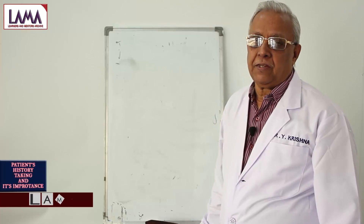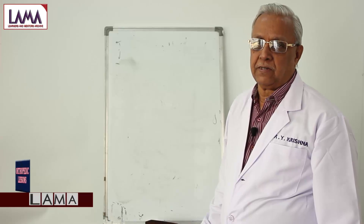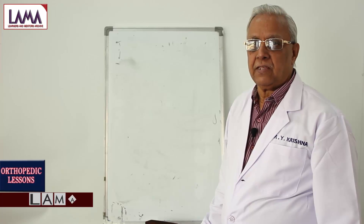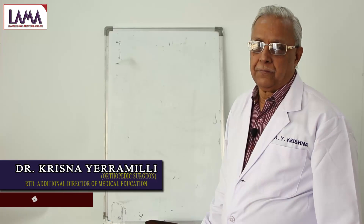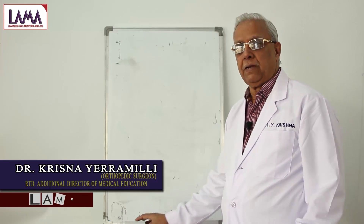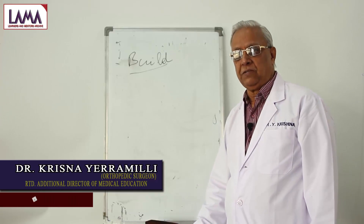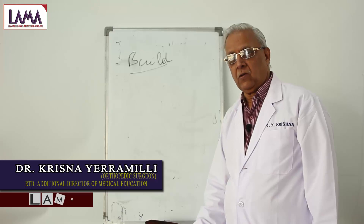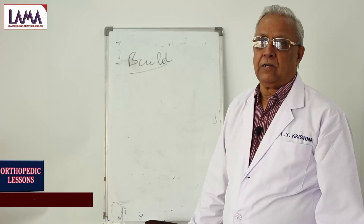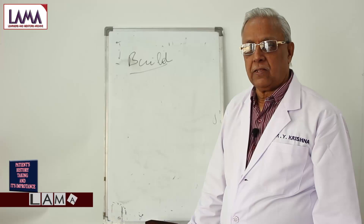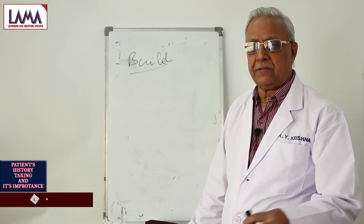Now, having taken the history, our next step is to make a physical examination of the person. Physical examination first involves the general assessment of the individual, such as the build of the person — whether the patient is obese, thin, moderately obese, emaciated, tall, or short. All these things one has to take into consideration when making a general examination.